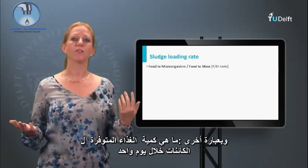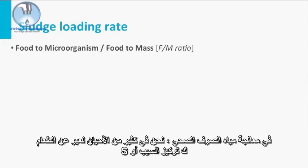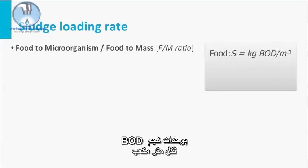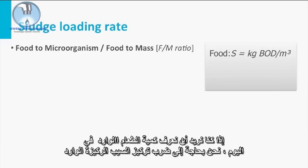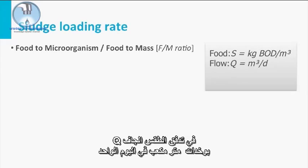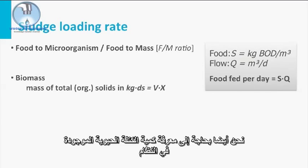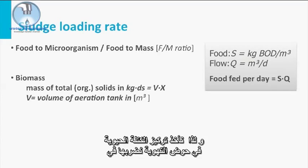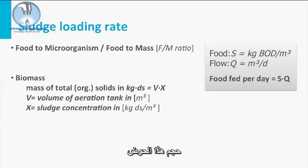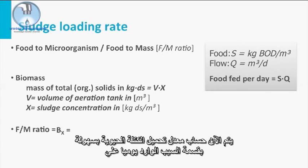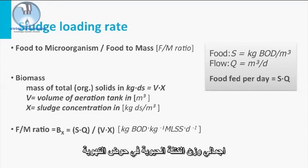In other words, how much food is fed to the bugs during a day. In sewage treatment we often express food in terms of substrate concentration, or S, in kilograms BOD per cubic meter. To know how much food we feed per day, we multiply the influent substrate concentration with the dry weather flow Q in cubic meters per day. We also need to know how much biomass is present, so we take the biomass concentration in the aeration tank and multiply it with the volume of this tank. The biomass loading rate is then calculated by dividing the substrate fed per day by the total biomass weight in the aeration tank.